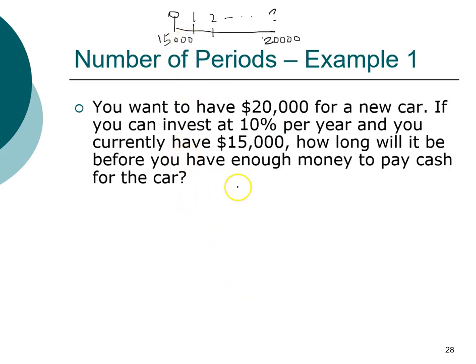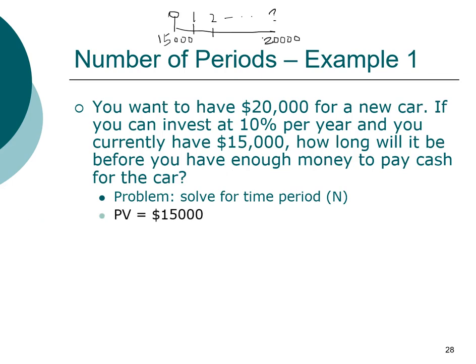The problem we're asked to solve is the number of time periods. The information we have is $15,000 as our present value, $20,000 as future value, and our interest rate is 10%. The timeline gives us all the information that we need.